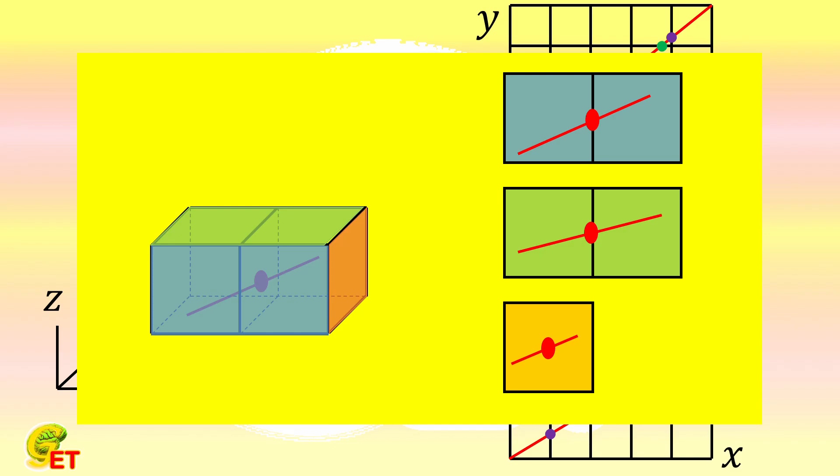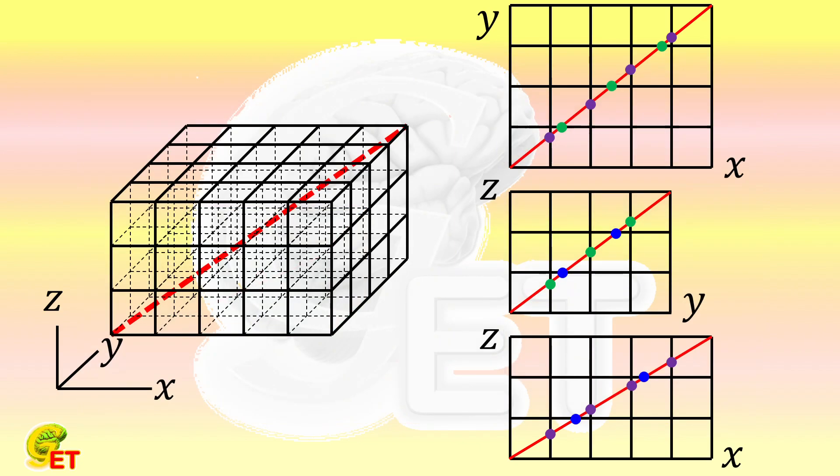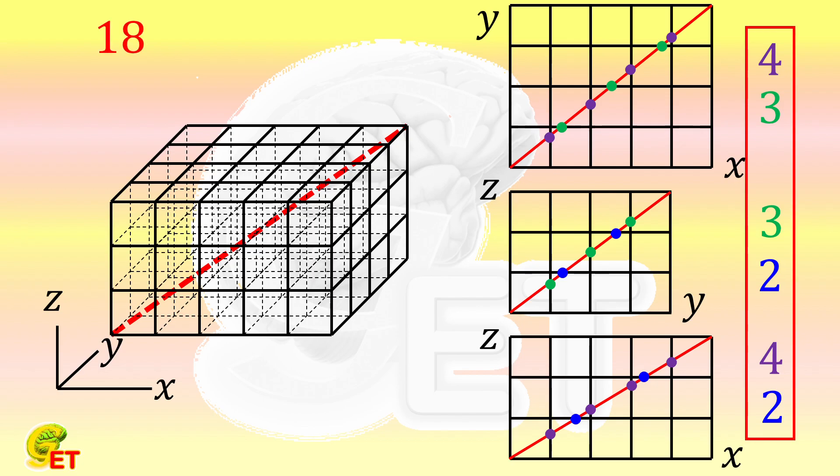Now let's count how many times in total it has crossed the boundary on these three projection planes. Four quinquesection points, three quadrisection points, and two trisection points. Each point appears twice, so a total of 18 points. That is to say, the space diagonal crosses the boundary for nine times in total. Nine borders means it goes through ten cubes in total.